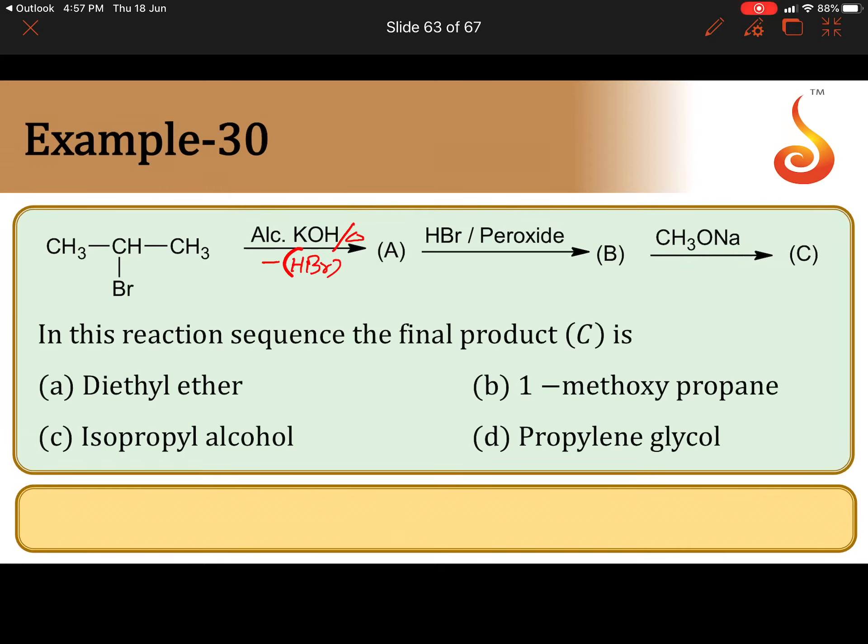After the formation of alkene, hydrogen bromide is added in the presence of peroxide. During the addition of hydrogen bromide in the presence of peroxide, it follows anti-Markovnikov's addition, opposite to Markovnikov's rule.